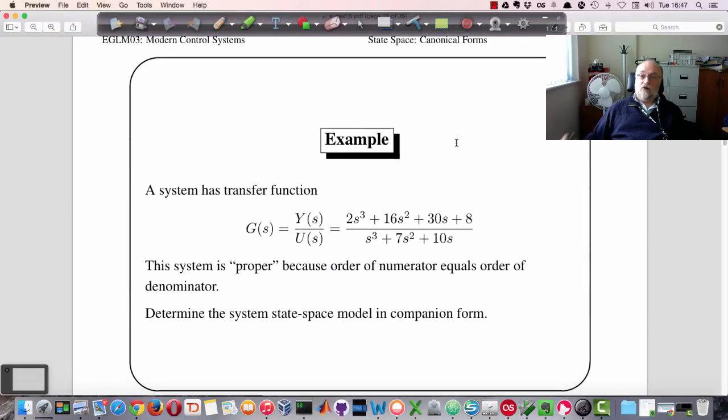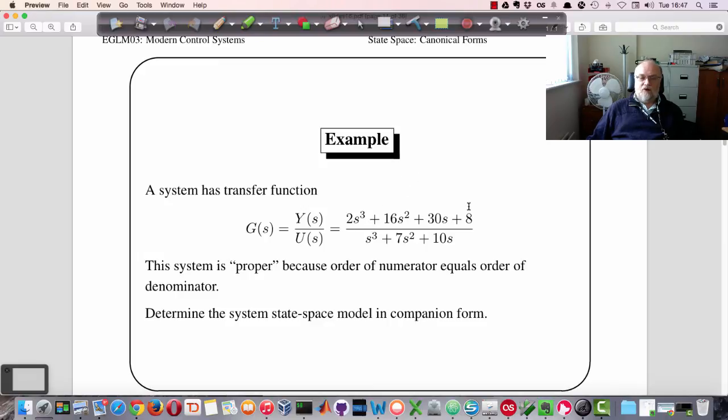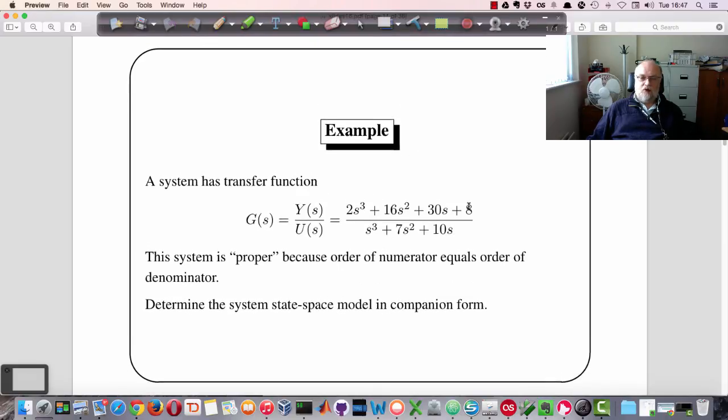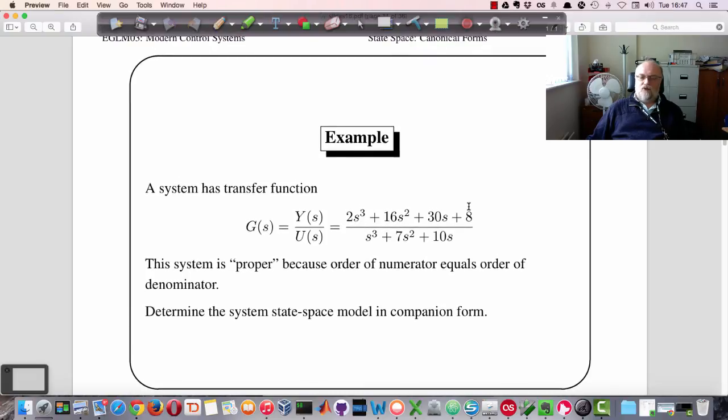And then to sort of conclude the lecture, we will go through this example where we have a system transfer function, a proper transfer function. And we will determine the state space model for this by inspection essentially. So that we can see the way that these companion forms work.